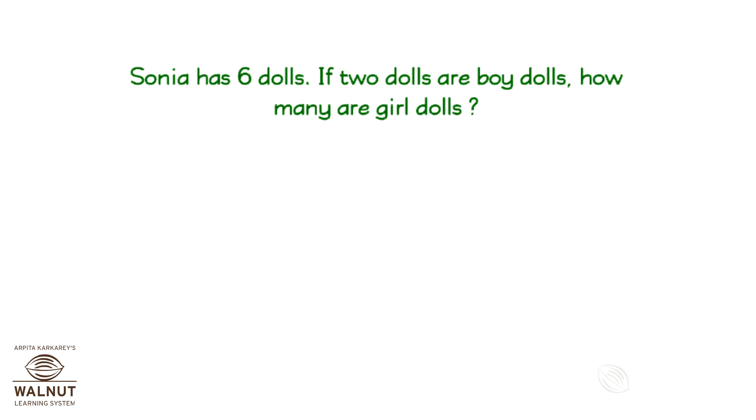Sonia has 6 dolls. If 2 dolls are boy dolls, how many are girl dolls? 6 minus 2 is equal to 4. So Sonia has 4 girl dolls.